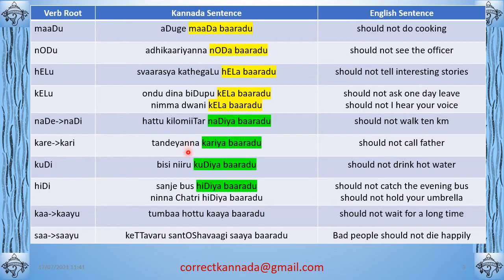'Nade' becomes 'nadi' in spoken Kannada — 'hatt kilometer nadiyabaradu' — should not walk 10 kilometers. 'Kare' becomes 'kariy' in spoken Kannada — 'tande yanna kariyabaradu' — should not call father. 'Kudi' — 'busy niru kudiyabaradu' — should not drink hot water. 'Hidi' — 'sanjay bus hidiyabaradu' — should not catch the evening bus. 'Ninna chatri hidiyabaradu' — should not hold your umbrella. Note: 'hidi' has two meanings — to catch and to hold. 'Ka' becomes 'kayu' — 'tumba huttu kayabaradu' — should not wait for a long time. 'Saa' becomes 'sayu' — 'kettavaru santoshavagi sayabaradu' — bad people should not die happily.